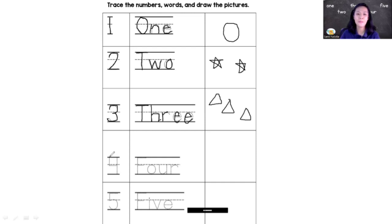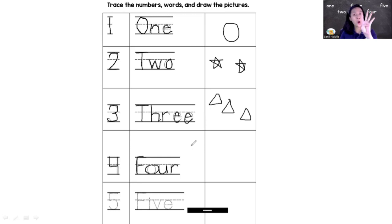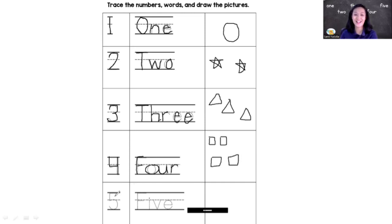Now next — number symbol four. Four. F-O-U-R. F-O-U-R. Four. I want to draw four squares. How about you? What do you have, children? Four squares. Yes.